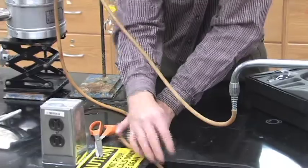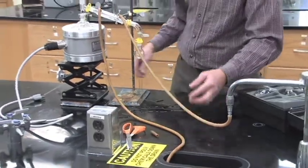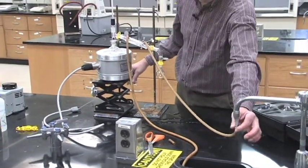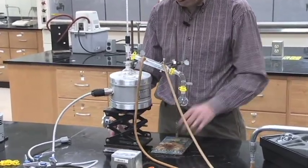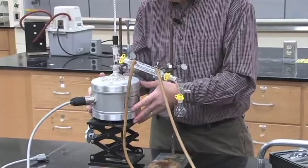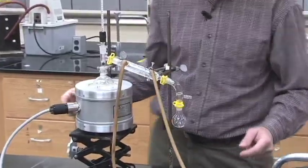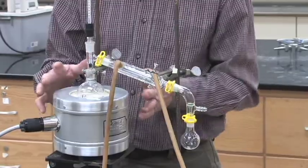And if you have the water on too high, what will happen is the hose will come off of either of the outlet on the sink, the faucet, or it'll come off of one of the outlets on your condenser. And it'll end up spraying across the lab and getting the person across from you wet. And they won't be very happy with that.